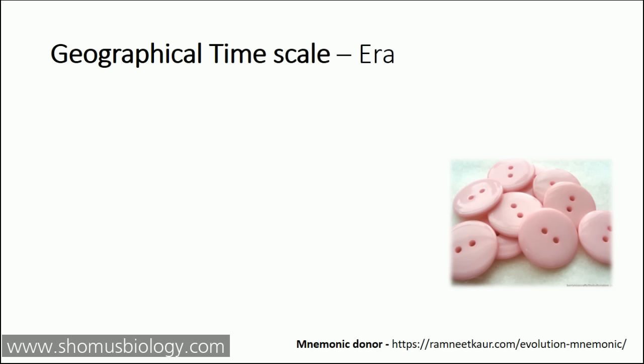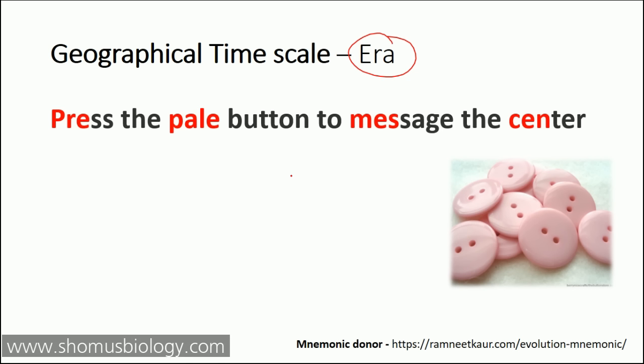The first thing you need to find out is the era. To get the era, there is a sentence you need to remember, and that sentence is: 'Press the pill button to message the center.' Yes, that's how easy it is — 'press the pill button to message the center.'